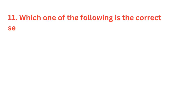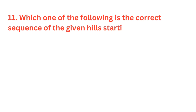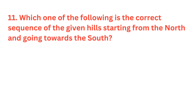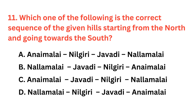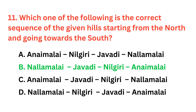Which one of the following is the correct sequence of the given hills starting from the north and going towards the south? The correct answer is option B: Nalamalai Hills, Jawadi Hills, Nilgiri Hills, and Annamalai Hills.